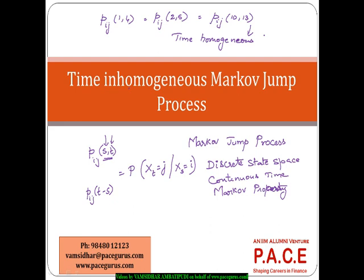What is typically coming out is that whether the person is a 5-year driver, a 0-year experienced driver, or a 15-year experienced driver, it hardly matters. But when I am talking about the time inhomogeneous process, all that matters is these are not equal. The probability of moving from state i to state j from the 1st to 4th year is different from the 2nd to 5th year, and different from the 10th to 13th year. The absolute values of s and t are really important in the time inhomogeneous process, whereas in the time homogenous Markov jump process only the difference t minus s matters.